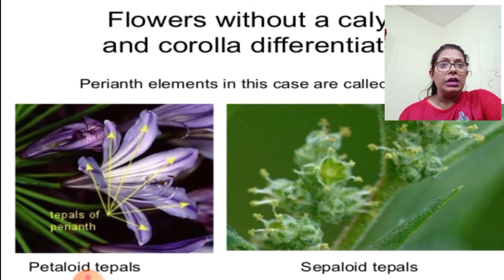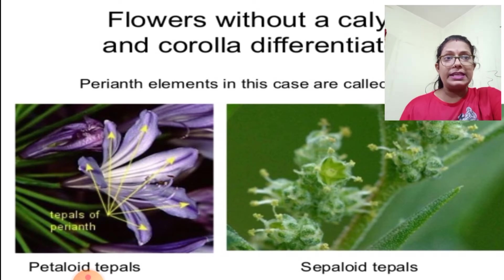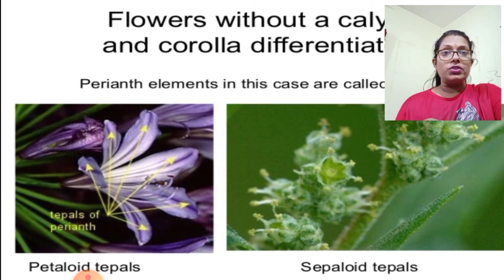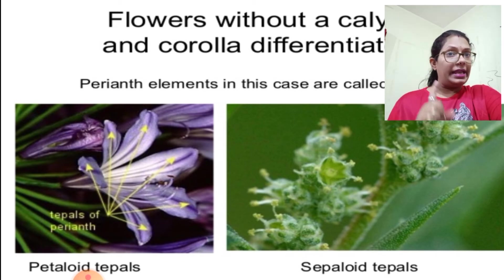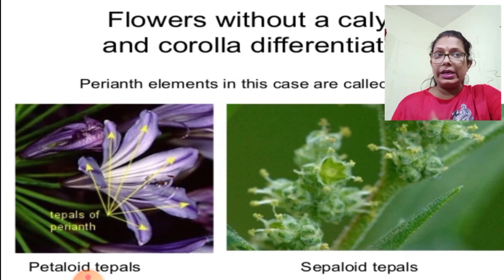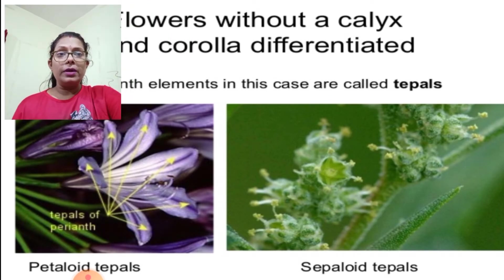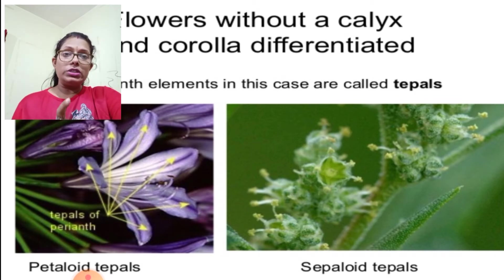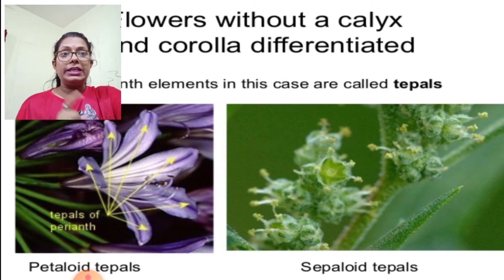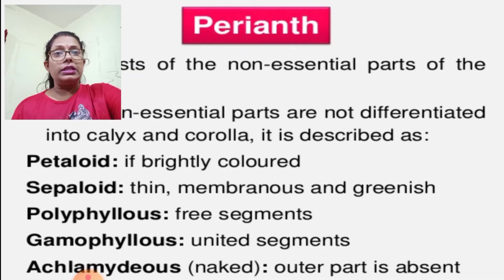When you cannot differentiate between calyx and corolla in a flower, such structures are called perianth. Normally, calyx is green and corolla is colorful. But when sepals and petals are of the same color — for example, both are green as shown in this slide — you cannot tell which part is a sepal and which is a petal.